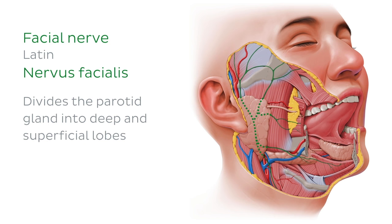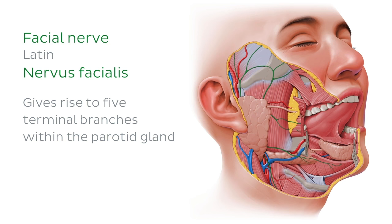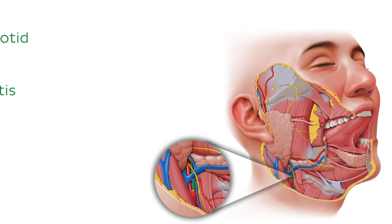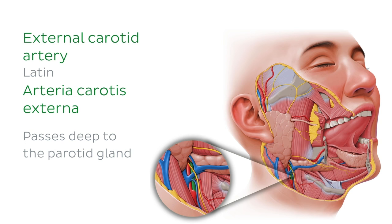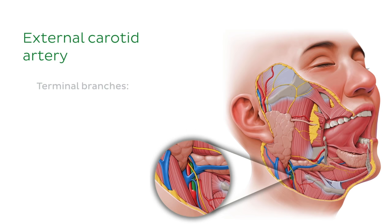The facial nerve gives rise to five terminal branches within the parotid gland, which go on to innervate the muscles of facial expression. The external carotid artery enters or passes deep to the parotid gland. As it ascends superiorly, the external carotid artery gives rise to the posterior auricular artery before dividing into its two terminal branches, the maxillary artery and the superficial temporal artery.